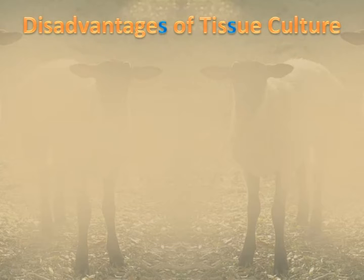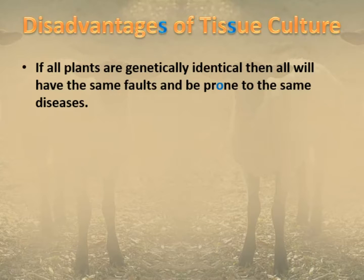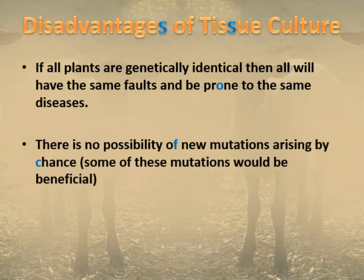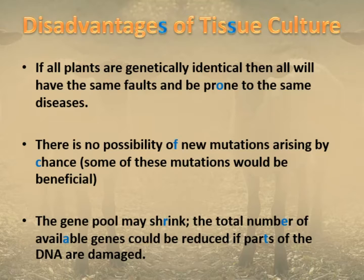However, there are disadvantages of tissue culture. All the plants being genetically identical means we keep all the things we want, but they will also share the same weaknesses to disease. Worse still, there is no possibility of new mutations arising to fight those diseases or gain other beneficial effects. If our plants are cloned, no blending of genes takes place, and the gene pool could shrink — the total number of available genes could be reduced because DNA can be damaged over time.